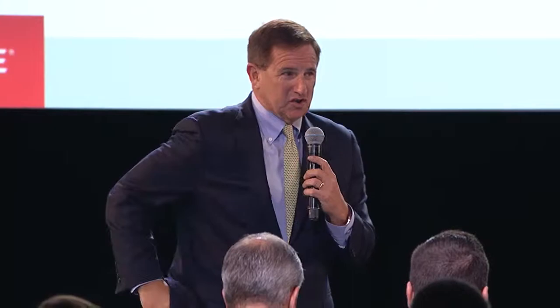Let me make sure I calibrate you on this chart because there are a lot of numbers and lines. This chart starts in 2008 and goes through 2015. The red line indicates the revenue growth of the S&P 500 — the 500 biggest companies in the US — and what it shows is that over this period of time there is really no revenue growth: about 1%.